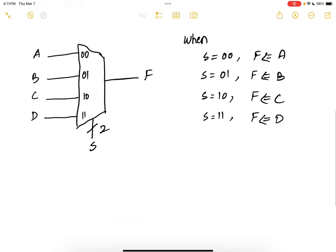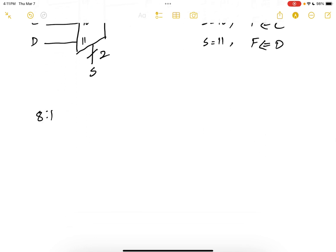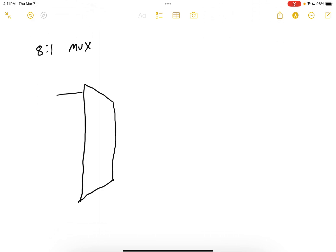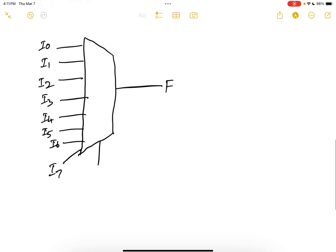Similarly, you can also have an 8 to 1 MUX. So 8 to 1 MUX would look something like this. So let's call this I0, I1, I2, I3, I4, I5, I6 and I7. You have only one output F. Now if you want to select 1 out of 8, you need 3 bits. So your select line will be 3 bits wide.